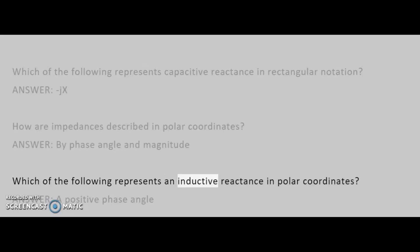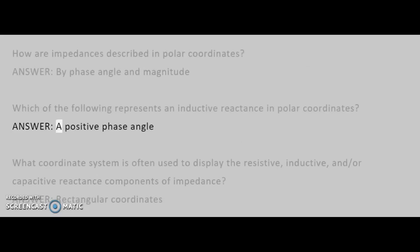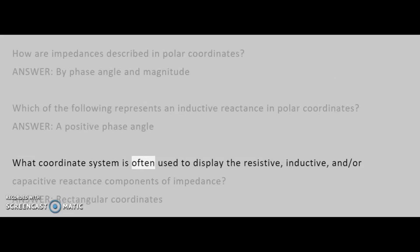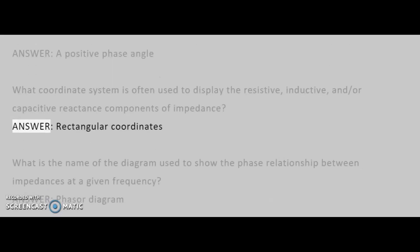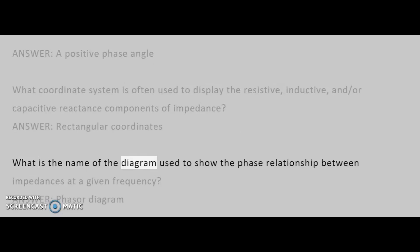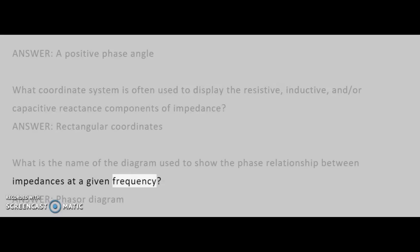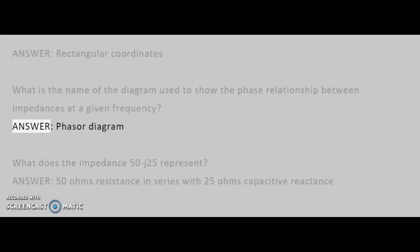Which of the following represents an inductive reactance in polar coordinates? Answer: A positive phase angle. What coordinate system is often used to display the resistive, inductive, and/or capacitive reactance components of impedance? Answer: Rectangular coordinates. What is the name of the diagram used to show the phase relationship between impedances at a given frequency? Answer: Phasor diagram.